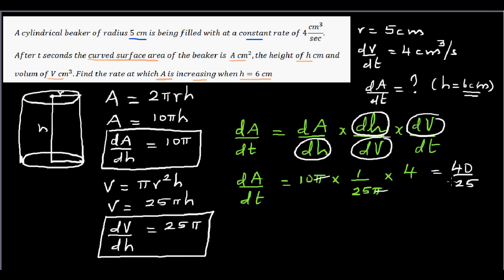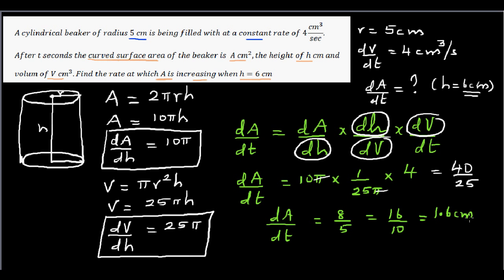So dA/dt = 40/25. Dividing both by 5 gives 8/5, which is 1.6 cm² per second. And that's the answer — the rate at which the curved surface area is changing is 1.6 cm² per second.